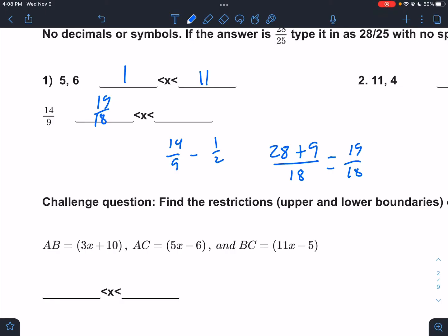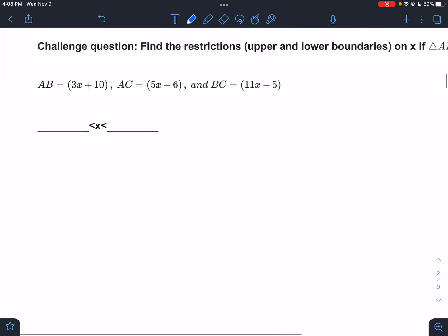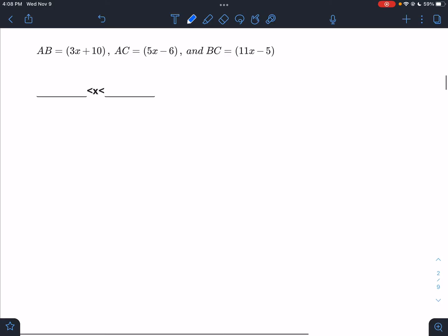Change that to a plus, 28 plus 9 would be 37 over 18. All right, challenge question, we talked about this. We have to first pretend this is the biggest one.